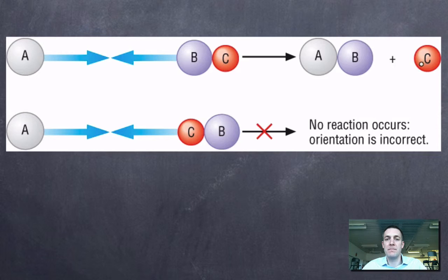But this A particle collides with this particle and doesn't lead to a reaction. Now, this could be true even if that collision had enough energy to exceed the activation energy. Because if the particles don't collide in the right direction, that is to say their orientation is incorrect, then even if that collision has got enough energy, the reaction can't happen.